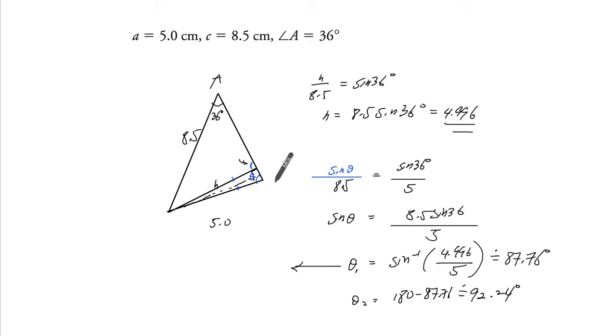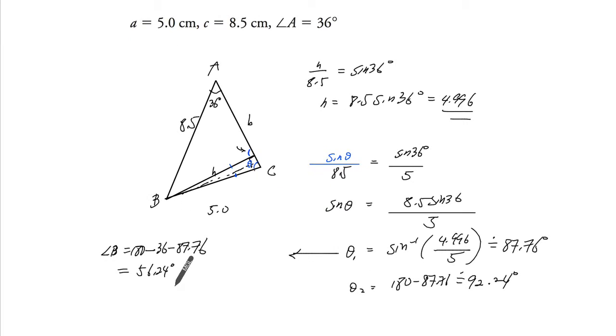So we have A, this was C. In this case, the angle of B will be 180 minus 36 minus 87.76, so we get that, and we can find the length of B.